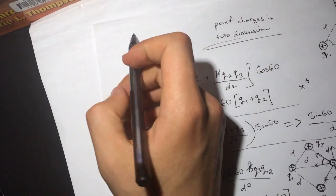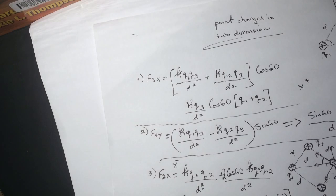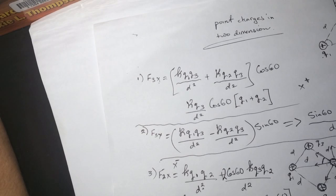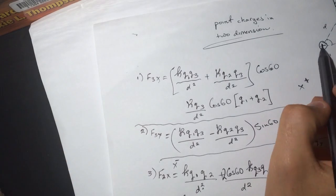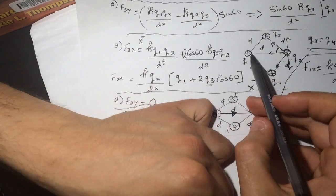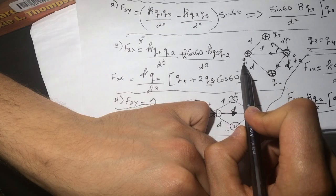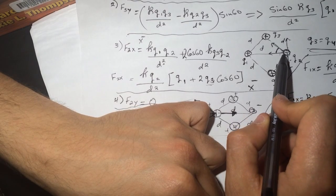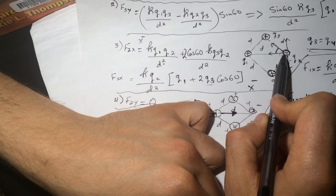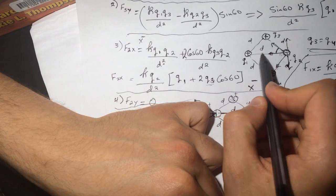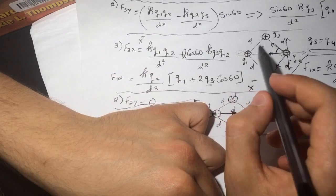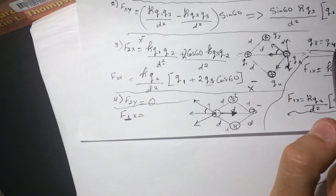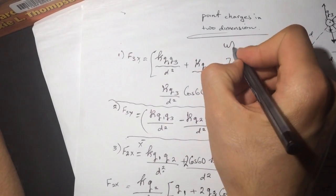The last question: how would you change q1, keeping all other charges fixed, to make the net force on q2 equal zero? The answer is to decrease its magnitude and change its sign — make q1 negative. This reverses the direction of the force from q1 on q2, allowing the net force to cancel out to zero.